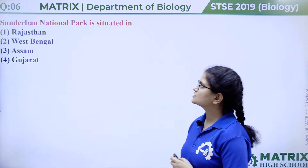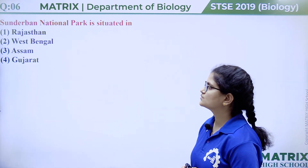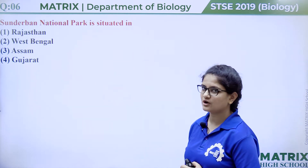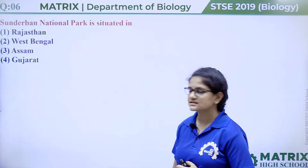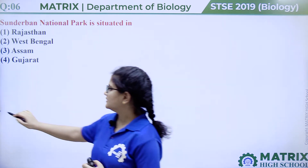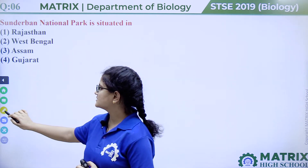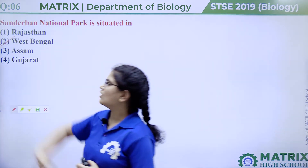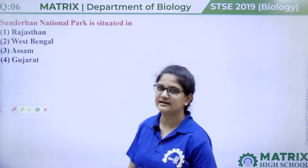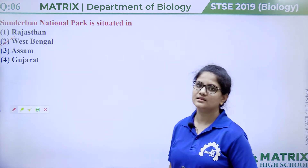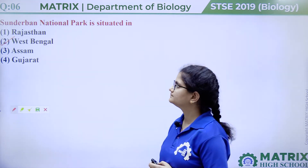Sundarbans National Park is situated in Rajasthan, West Bengal, Assam, or Gujarat. The answer is option two, West Bengal, and it is meant for the conservation of tigers.